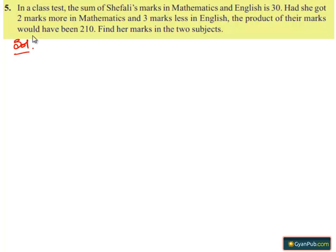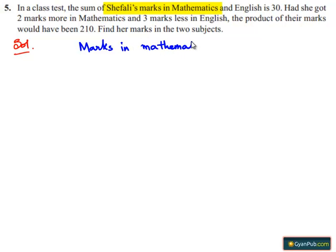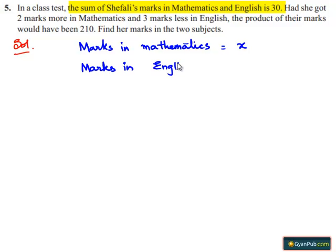Let us see the solution. Assume the marks of Shefali in Mathematics is equal to x. So marks in English is equal to 30 minus x. This is because the sum of marks in Mathematics and English is equal to 30.